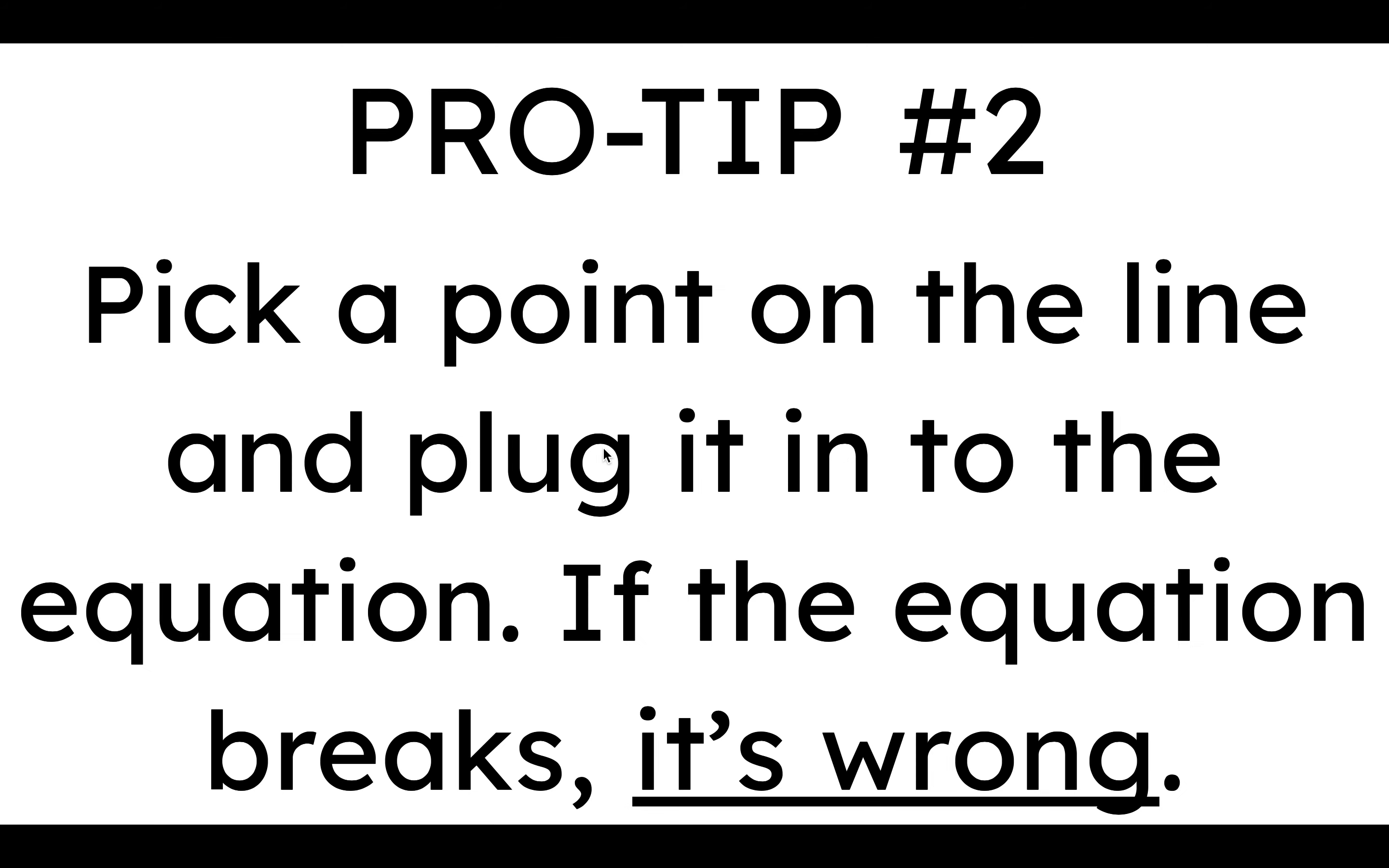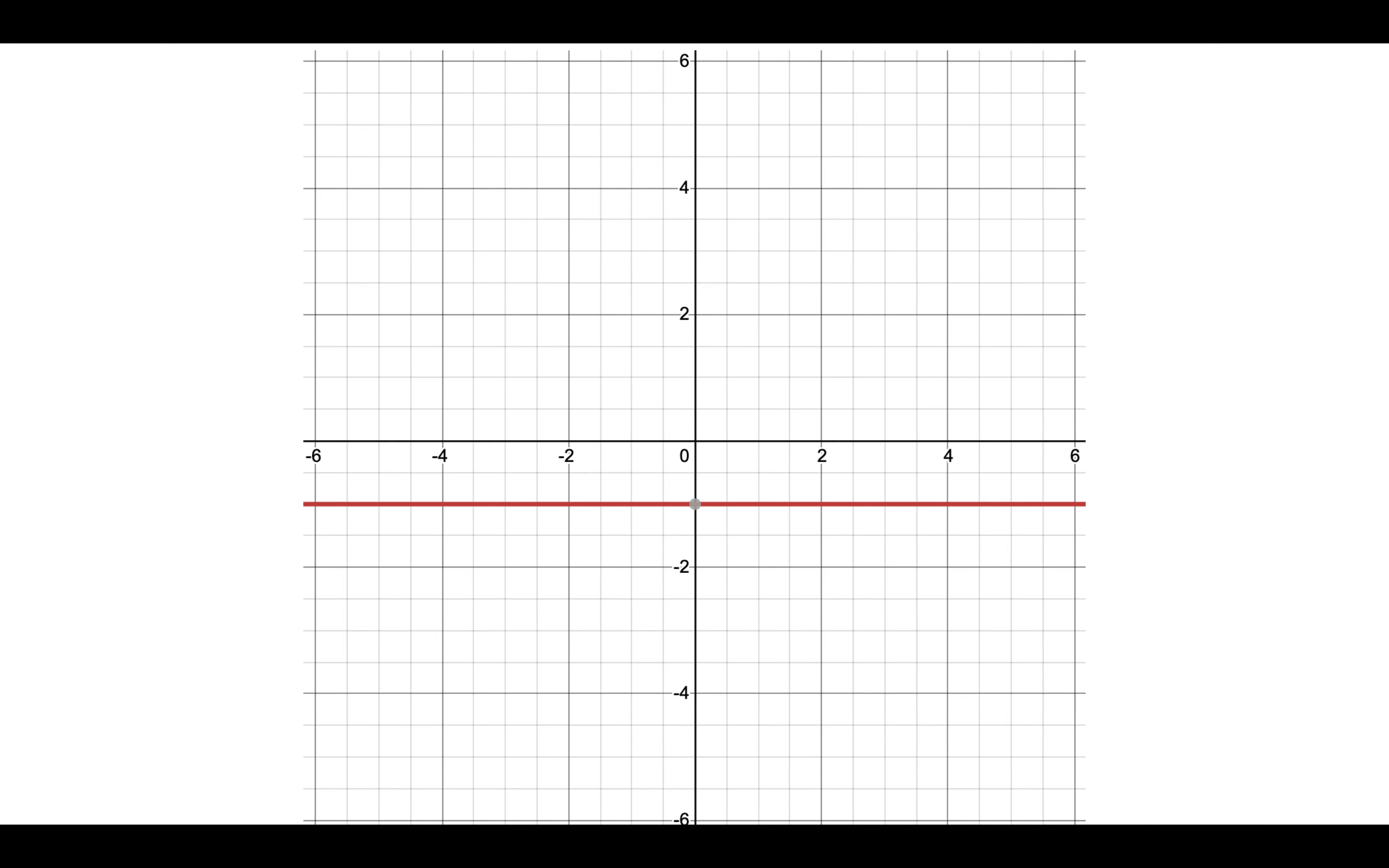Pro tip number two. If you want to check your work, you can pick a point on the line and plug it into the equation. If the equation breaks, it's wrong. So what does this mean? It means that when you look at this line, for the equation we're given, if this is the right graph, every single point on this line is going to work in the equation. It's going to equal itself. So here's a point that's like 4, negative 1.